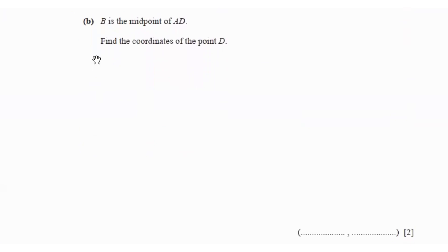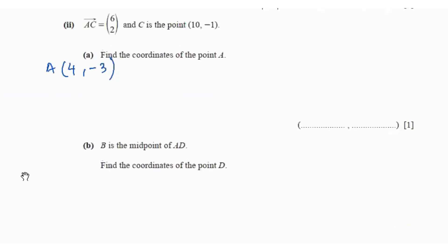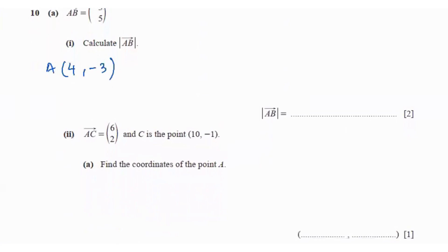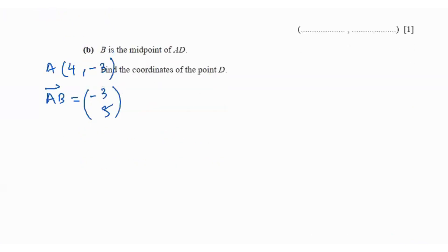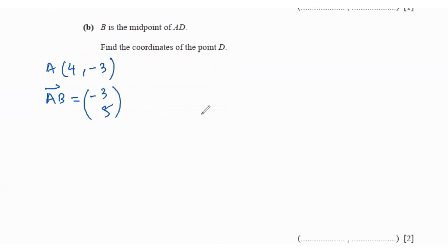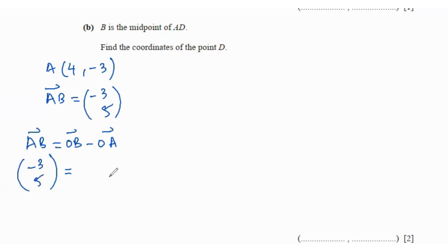Next it says B is the midpoint of AD. Find the coordinates of D. So B is the midpoint of AD. We know A is (4, -3) and we know AB is (-3, 5), so let's use that information to find B first.